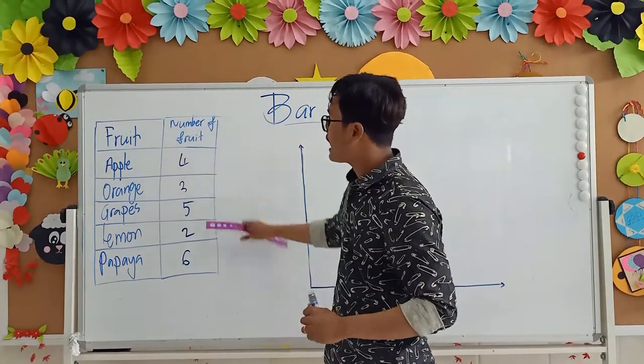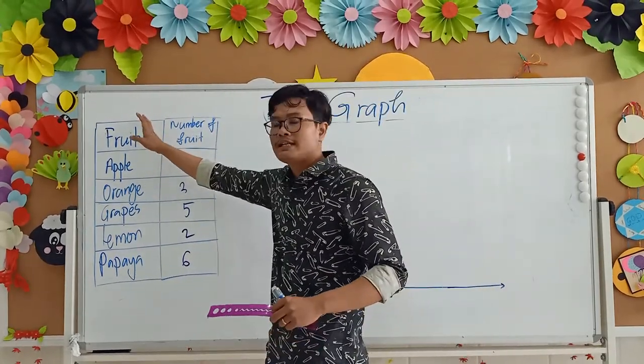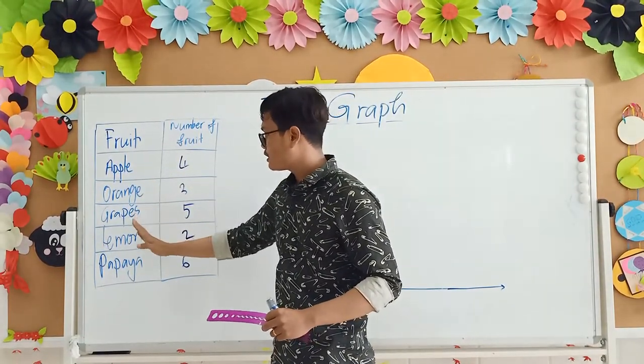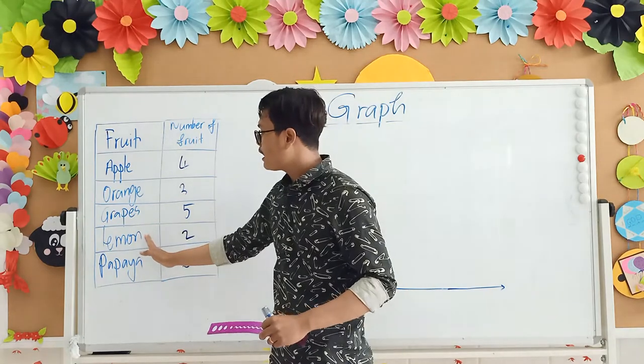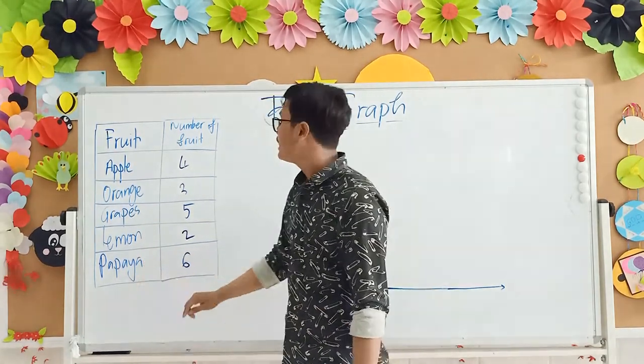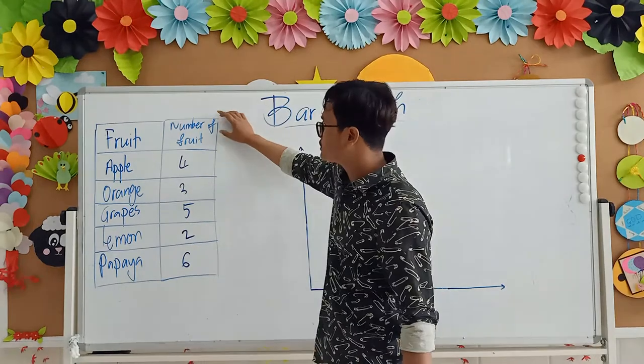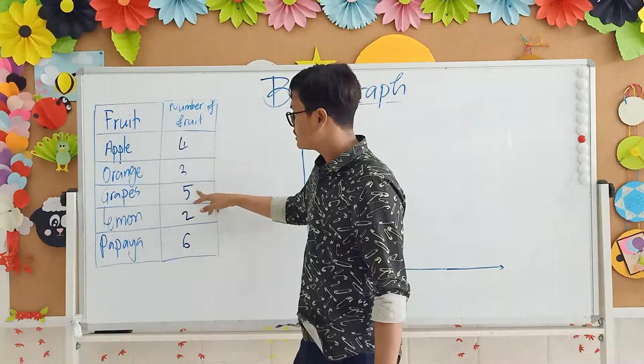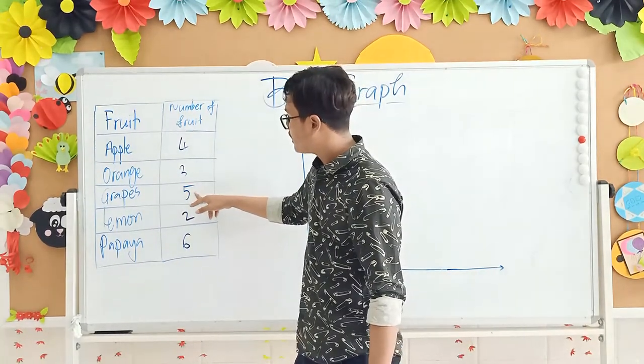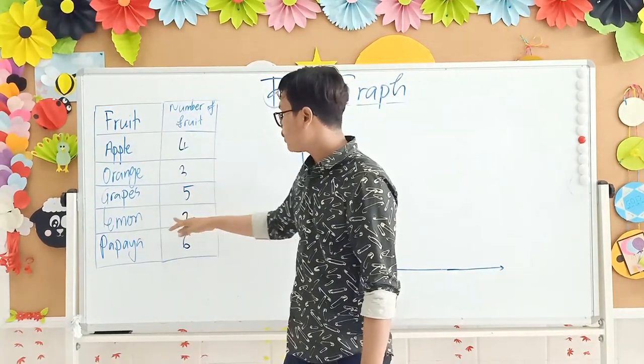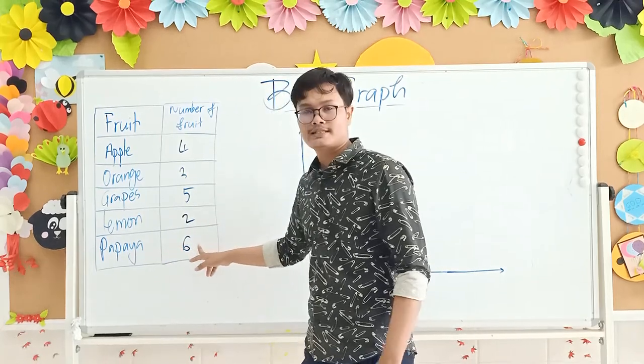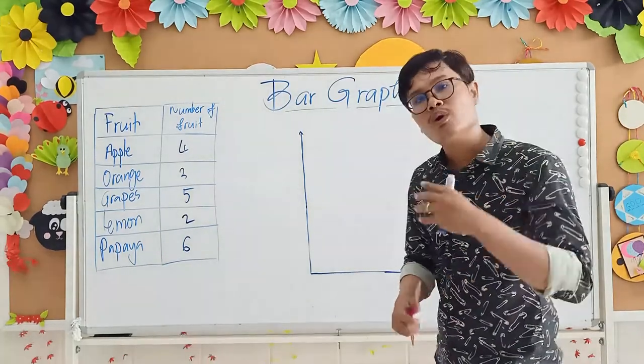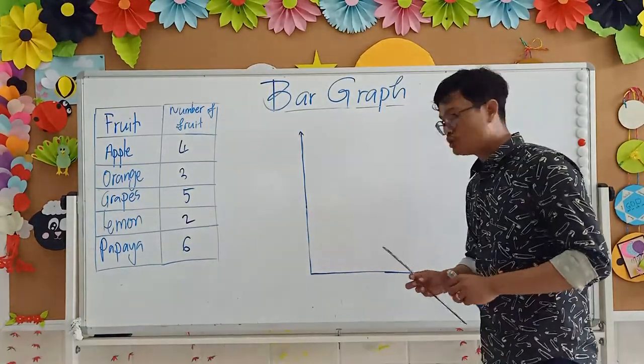Here are bar graph. How do you write? Bar graph. So see my example. Here I have fruit. You can say the kind of fruit. We have apple, orange, grapes, lemon, papaya. Six. So here the number of fruit. We have apple four, orange three, grapes five, lemon two, and papaya six. So here, how do I write bar graph? Or how do I do most to show bar graph to you?